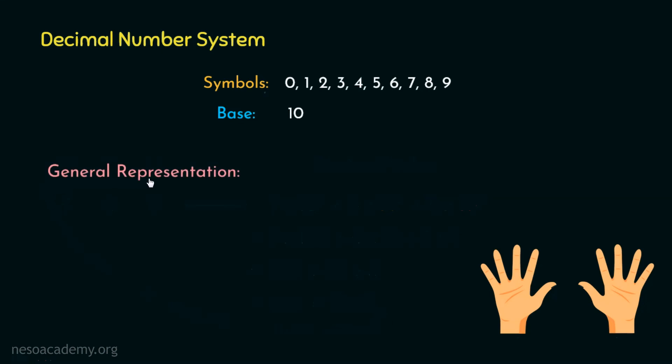Now coming to the general representation, consider a 5 digit decimal number. Now in all these places, any symbol from 0 to 9 can be placed. Now being a decimal number, it will have the base as 10, and therefore the place values will be 10 raised to the power 0, 10 raised to the power 1, 10 squared, 10 cubed, till 10 raised to the power 4.